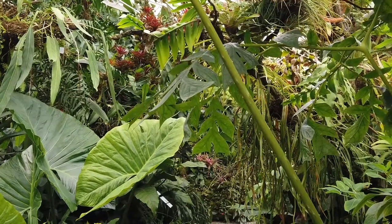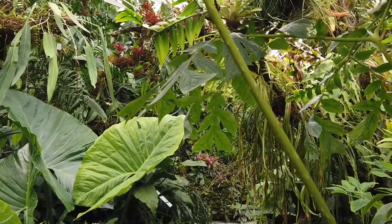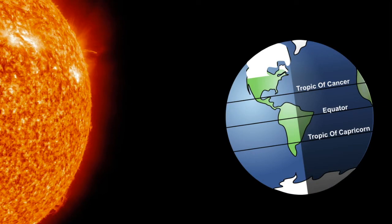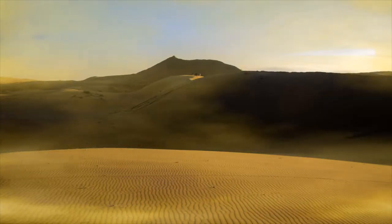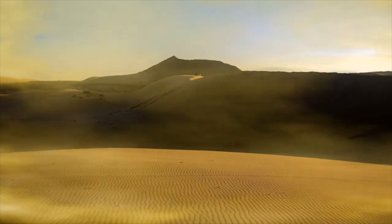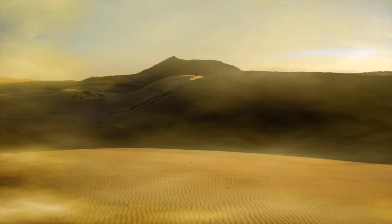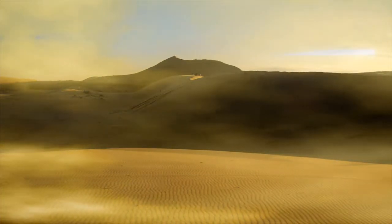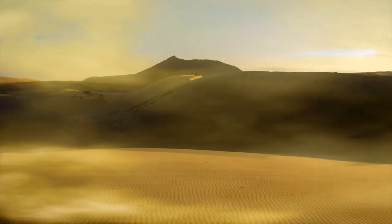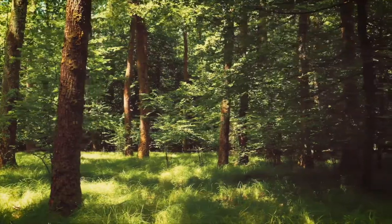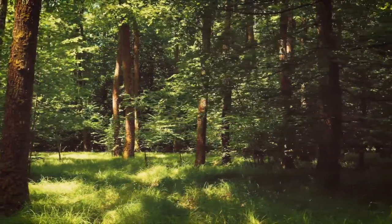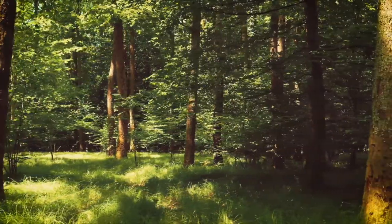Tropical climates are hot and humid, and this climate is mostly found near the equator, where direct sunlight keeps temperatures warm year-round. Dry climates have very little precipitation or humidity, and any moisture quickly evaporates. Temperate climates have warm, humid summers with chilly but mild winters.